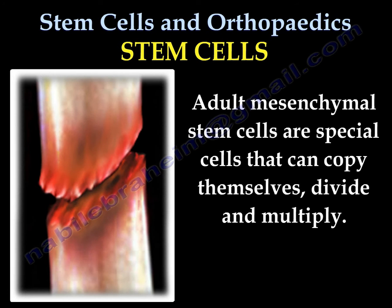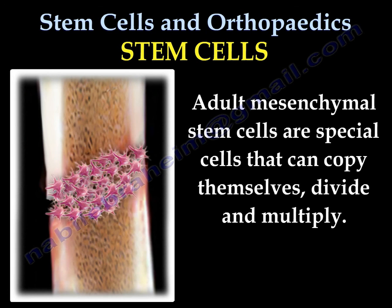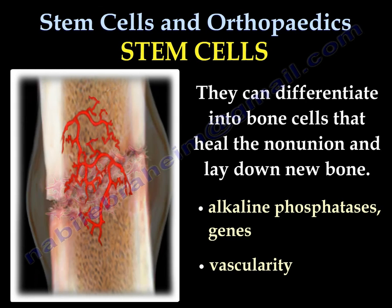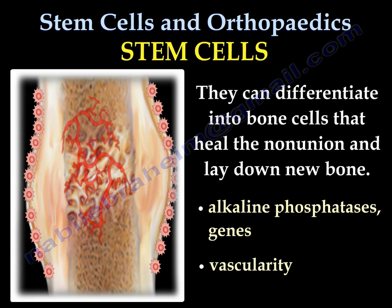Adult mesenchymal stem cells are not embryonic cells. They are special cells that can multiply, divide, and copy themselves. They can differentiate into bone cells that heal the nonunion and lay down new bone. We can monitor that by alkaline phosphatase activity or by the genes of the stem cells. The whole cellular mechanism also helps in increasing the vascularity of the nonunion.